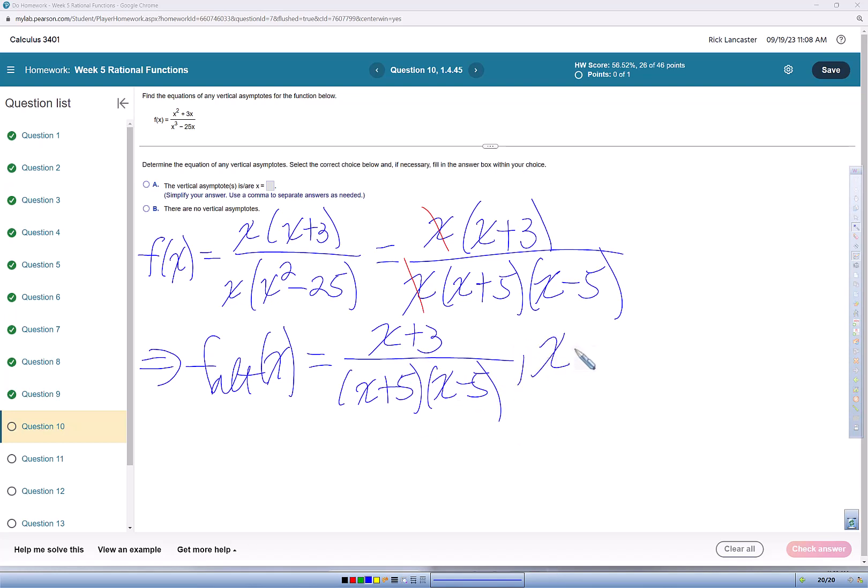But then we have to say x can never equal zero. So our vertical asymptotes are going to be x equals negative 5 and x equals 5.